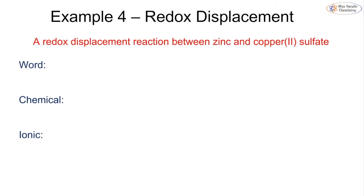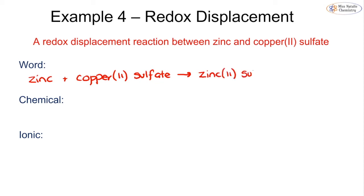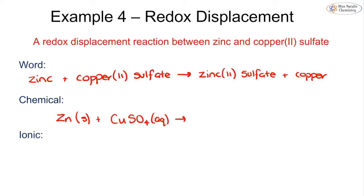Example four is a redox displacement reaction using the reactivity series — the reaction between zinc and copper sulfate. Zinc is higher than copper in the reactivity series, so zinc displaces copper. The word equation is: zinc + copper sulfate → zinc sulfate + copper metal. In the chemical equation: zinc is a solid (Zn(s)), copper sulfate is CuSO4 (aqueous), zinc sulfate is ZnSO4 (aqueous), and copper is Cu(s).